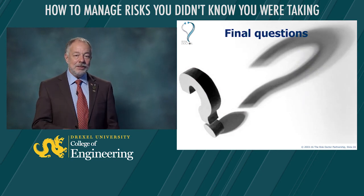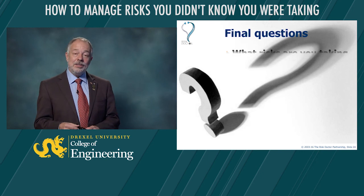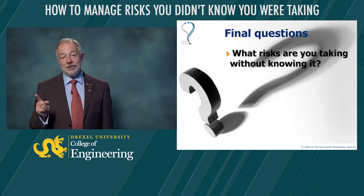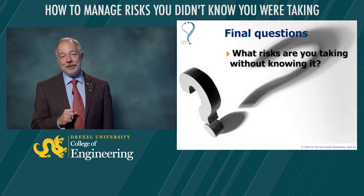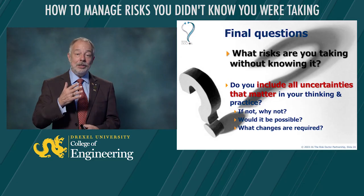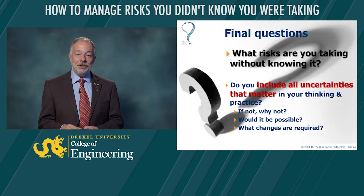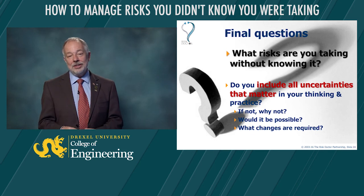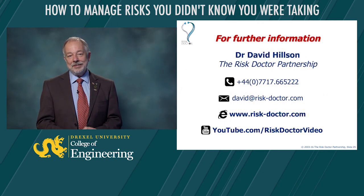The landscape of risk — the landscape of the uncertainties that matter that we're exposed to — is much broader than just uncertain future events that might have a negative effect on our project budget or schedule. There are many more risks that could affect your project, and we need to be aware of those and manage them. So let me leave this presentation asking you a couple of key questions: what risks are you taking without knowing? If you only think about threats to project time and cost, you're missing a huge amount of risks that could be affecting you. If you don't include all of the uncertainties that matter in both your thinking and practice, why not? Would it be possible for you to change your thinking and your practice to include all of these things, and what changes do you need to make to the way you think about risk and act towards risk in order to manage all of the risks you're currently taking? It is possible to manage all of those risks so that we give ourselves the best possible chance of succeeding. I recommend that you try it. Thank you very much for your attention.